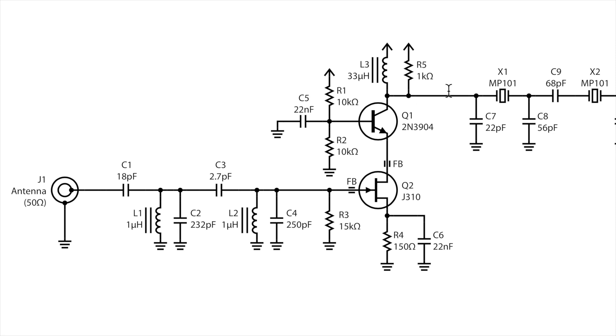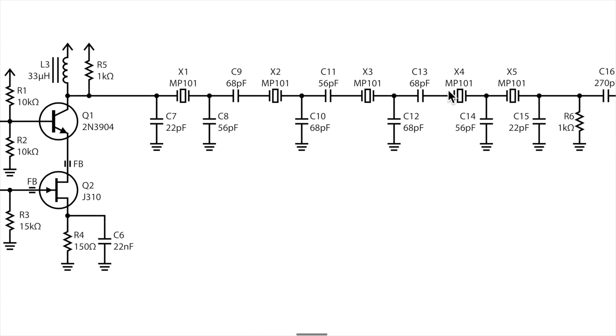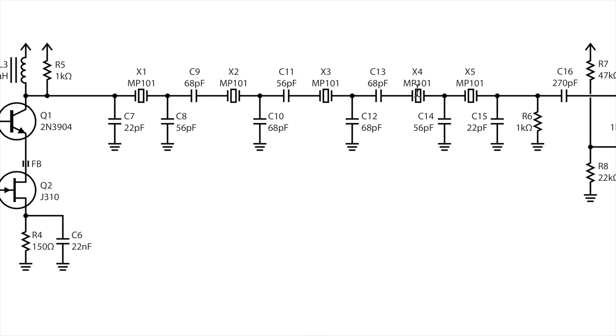Now the output of this gain stage drives the crystal filter. The crystals are from CTS. They're part number MP101. They're marked for 10 MHz with 30 pF in parallel, which means the real series resonant frequency is lower. I measured it at 9.997 MHz. Now that's good because for this filter topology, the pass band is pretty much all above the series resonant frequency. So having that series resonant frequency be below 10 MHz, you end up with the 10 MHz carrier in the pass band. It's not quite centered up, but it's in there and it'll work.